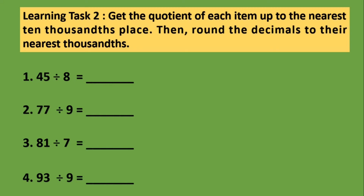For learning task 2, get the quotient of each item up to the nearest ten thousands place, then round the decimals to their nearest thousands. So, 45 divided by 8 is equivalent to 5.6250. If we're gonna round it off to the nearest thousands, ang digit na nasa thousands place is number 5, and ang nasa kanan ng number 5 is 0, which is less than 5. So, all we need to do is retain the number on the rounding place. The answer would be 5.625 or 5 and 625 thousands.